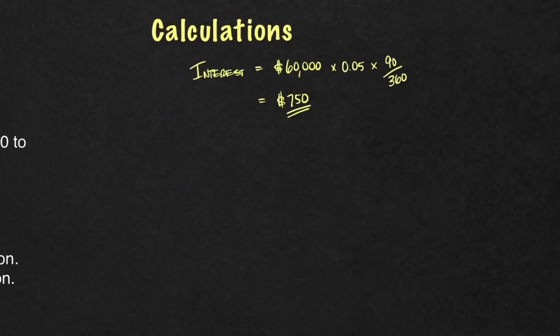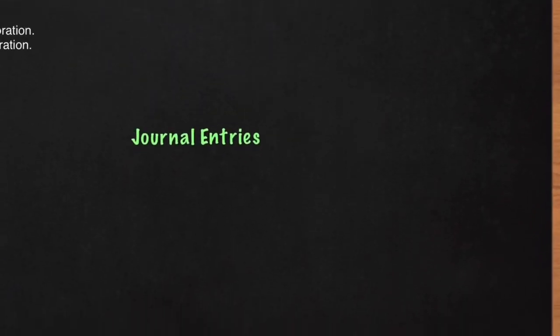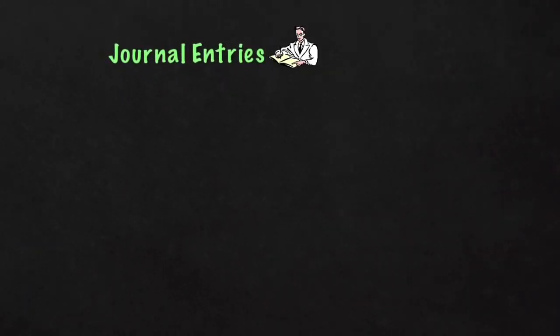So big picture: you borrowed $60,000, the creditor's charging you 5%, and you have 90 days to pay it back, and your interest to borrow that money is $750. The first set of journal entries is when we borrow the money, or the issuance of the note. When you borrow money you will get cash - you're going to debit Cash for $60,000, and you're going to credit Notes Payable because now you owe on that loan $60,000.